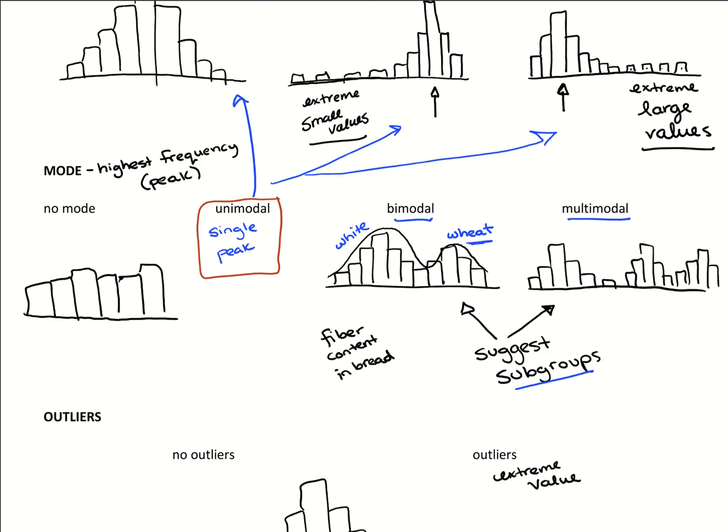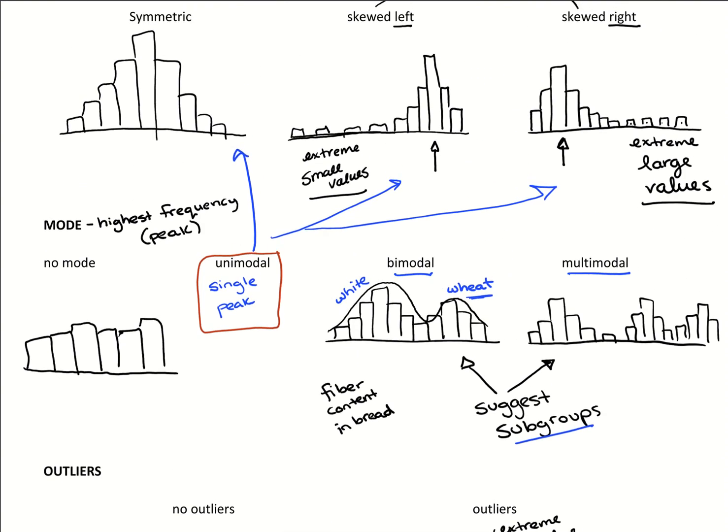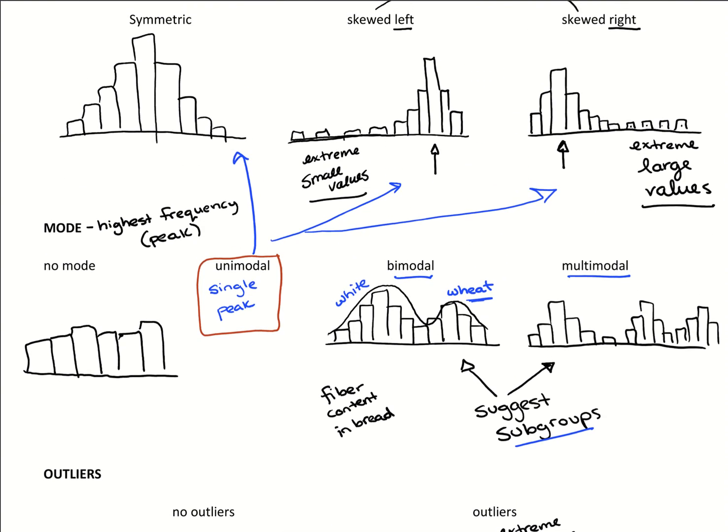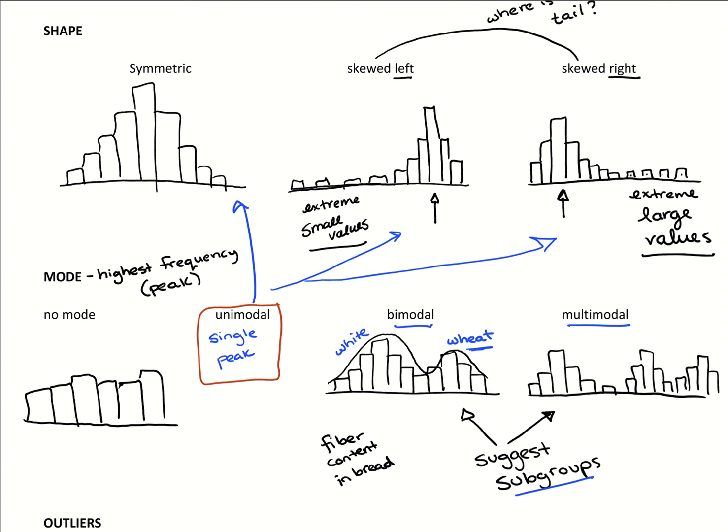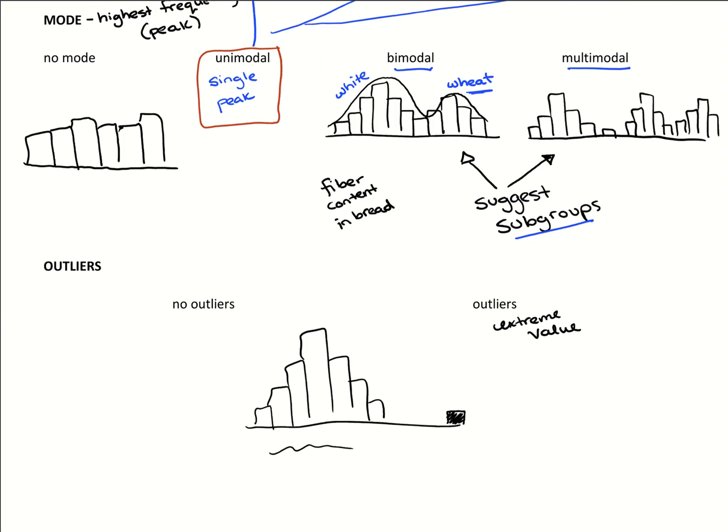So once we get our graphs, this is how we can start describing them, figure out how many modes we have. If it's unimodal, we can go through describing the shape that we did at the beginning there. And then we just want to be aware of any potential outliers that we see coming through.